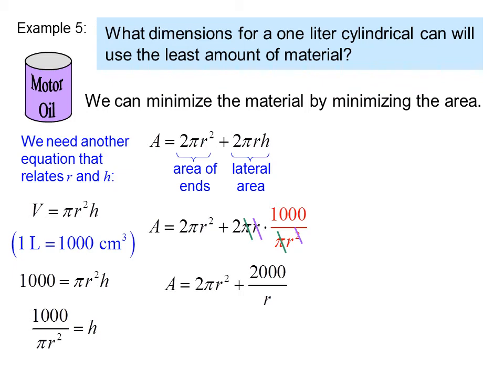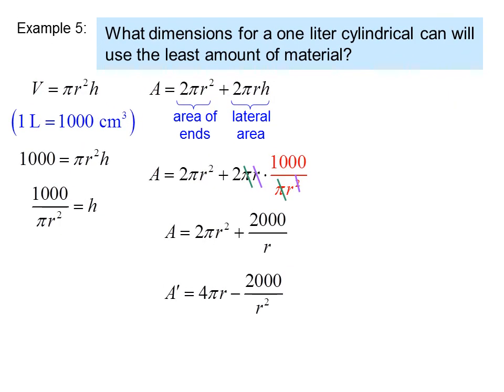Now we want to minimize the area, so we need to find the first derivative. We get A' equals 4πr minus 2,000 over r². We set the first derivative equal to zero and solve for r.